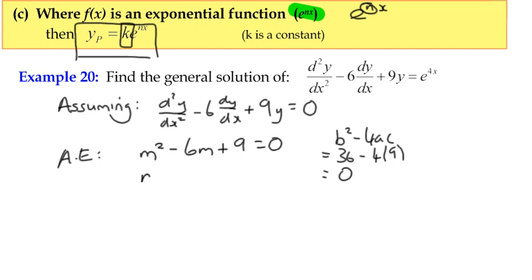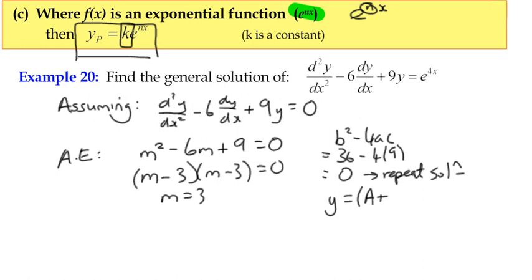What does that mean? It means we're going to have one solution. So we've got (m - 3)(m - 3) = 0, so the solution is m = 3, a repeated solution. If it's got a repeated real solution, then we're going to use the form y = (A + Bx)e^(mx), where m is 3.